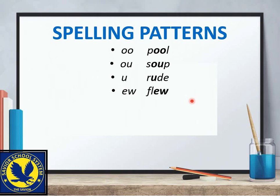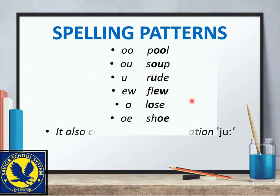Then 'flu', 'flew' — ان کو بھی long vowel کے ساتھ پڑھتے ہیں۔ 'Lose' کو 'loss' یا 'lows' نہیں پڑھنا بلکہ 'lose' پڑھنا ہے — یہ long vowel sound ہے۔ 'Shoe' بھی long vowel ہے اگرچہ spelling میں o اور e آ رہا ہے۔ It also comes in the combination of ya sound and uː sound.